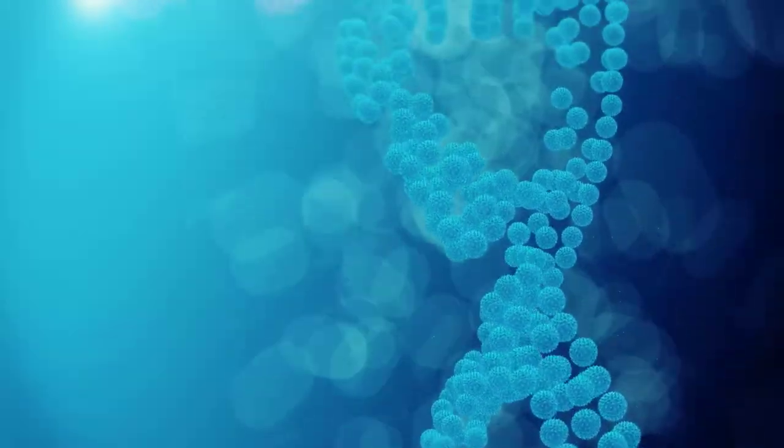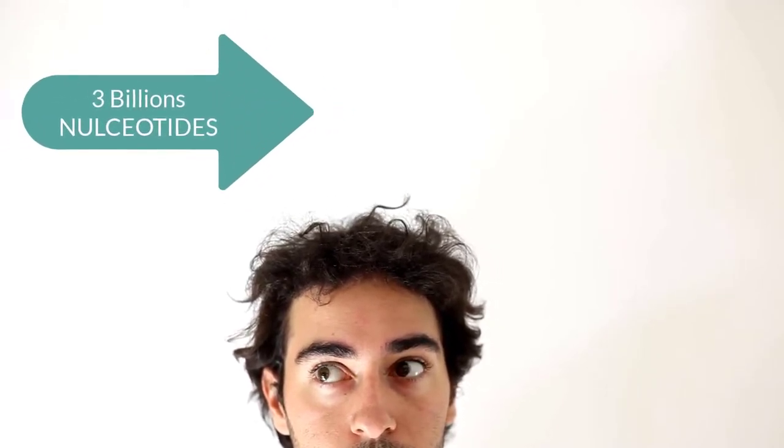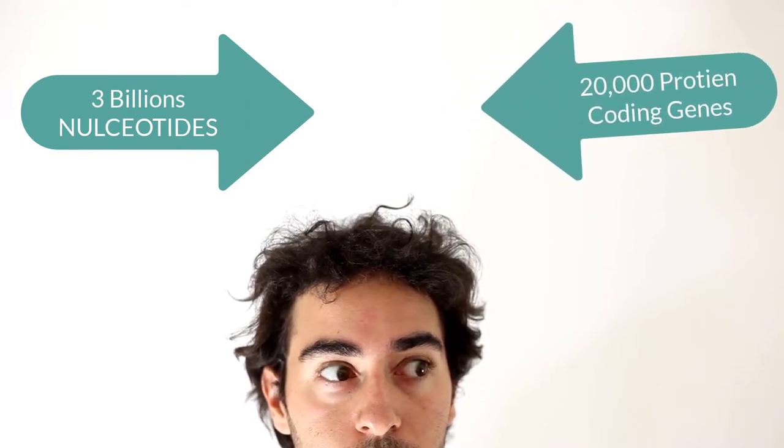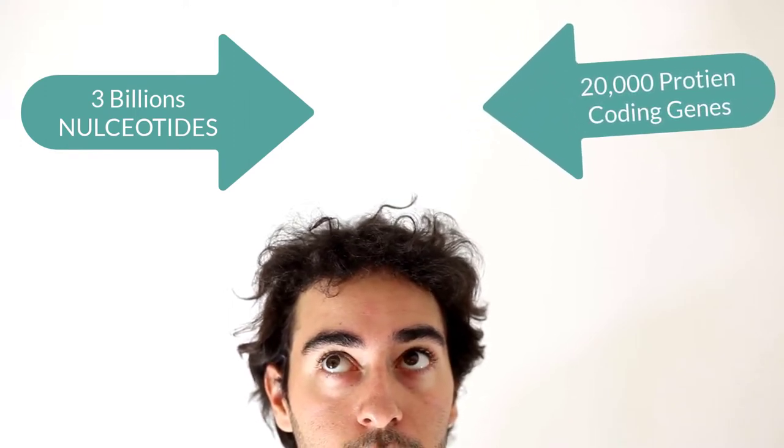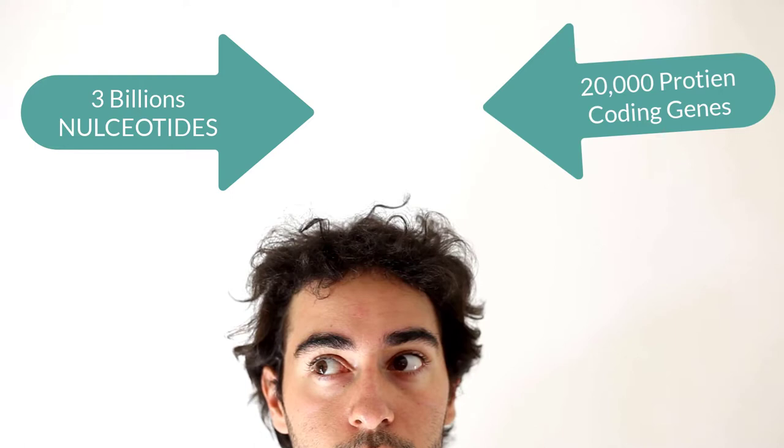Talking about human beings, the human genome contains roughly 3 billion nucleotides and just under 20,000 protein-coding genes, an estimated 1% of the genome's total length.